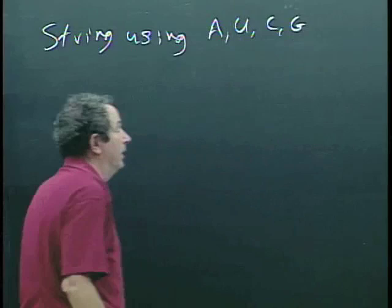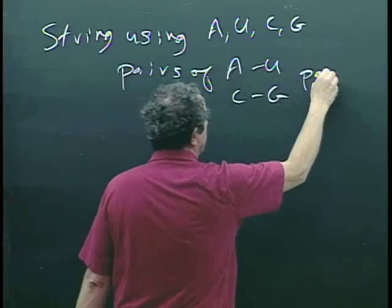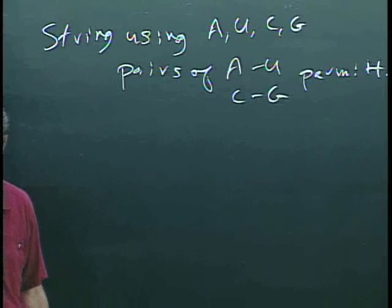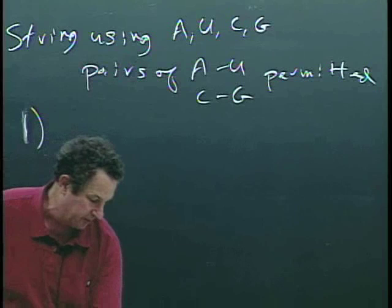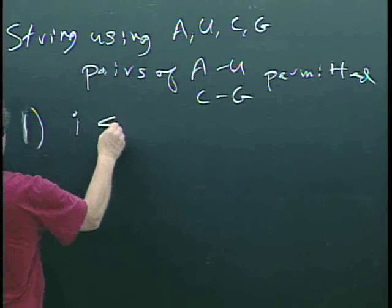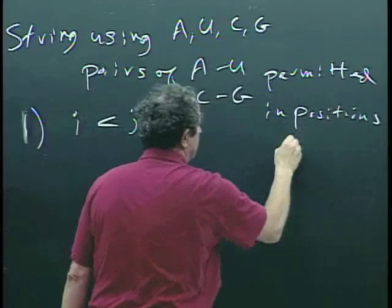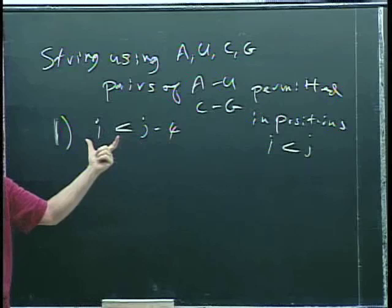We're permitted to pair. Pairs of A and U, and C and G, are permitted. We have four conditions that have to hold in getting a secondary structure. The first condition is i less than j minus 4 — so if positions i and j are paired, there must be at least four positions between them. They can't be neighbors; they can't be too close.